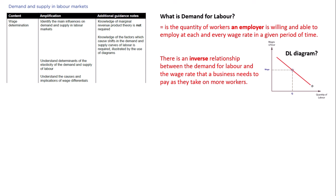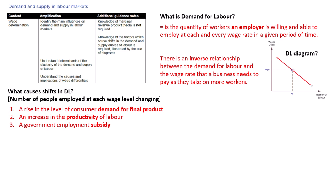The next thing is to identify what causes shifts in the demand for labour. There are three reasons: an increase or decrease in the demand for the final product, an increase in the productivity of labour, and a government employment subsidy. Labour has a derived demand — it comes from the demand for the final product. So if there's an increase in demand for cars, there will be an increase in demand from employers for mechanics involved in the production process.